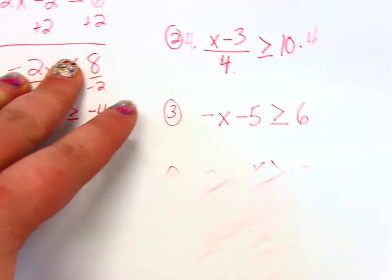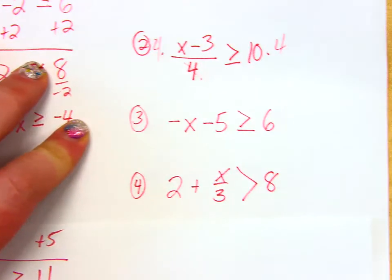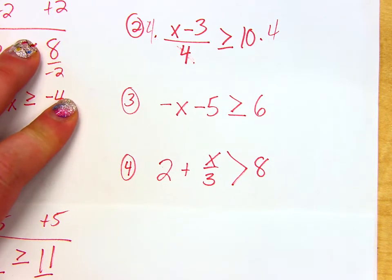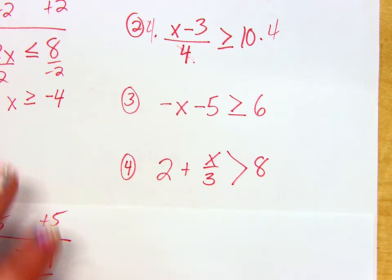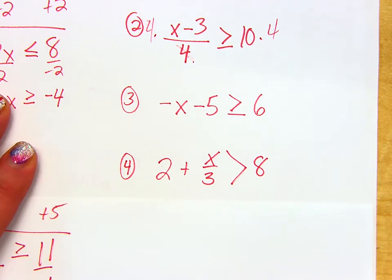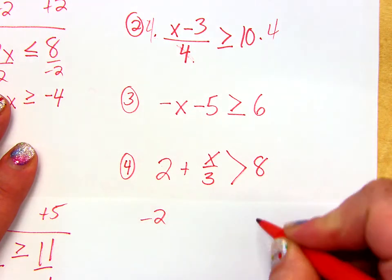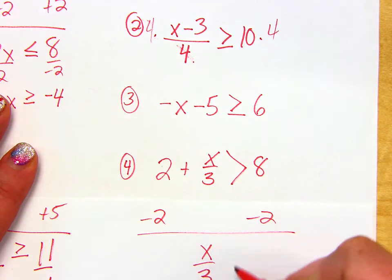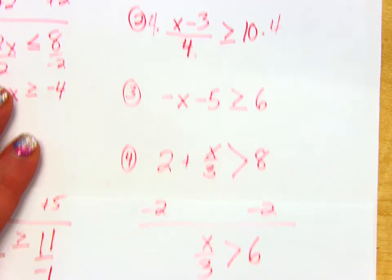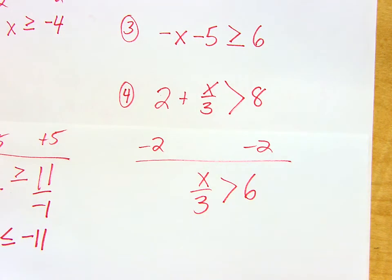And then the last one I asked you to do, this one here, number 4. What is the first thing that I do on this one, Joe W? Yes. Subtract that 2 from both sides. So now I have x over 3 is greater than 6.